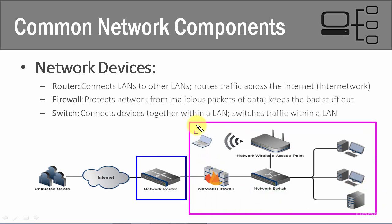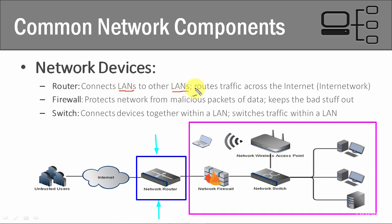This right here is our network, and on the border of the network we always have a router. That's what shows the edge of our border, and on the other side is the internet that we're trying to connect to. What does a router do? It connects one local area network — one LAN — to another. That's the whole point of a router: it routes traffic from one network to another.